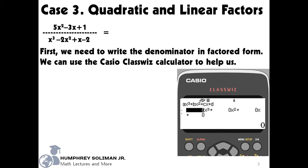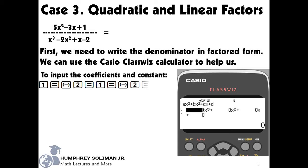We are now ready to input the coefficients and constant term of our denominator. We will follow the string of keys. After that, we will press the equals key to see our first value of x, x equals 2. This gives us the first factor which is x minus 2.